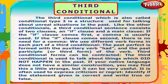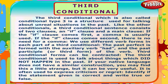Third conditional forms can be contracted. The third conditional is used to talk about things which did not happen in the past. If your native language does not have a similar construction, you may find this a little strange, but it can be very useful. It is often used to express criticism or regret.